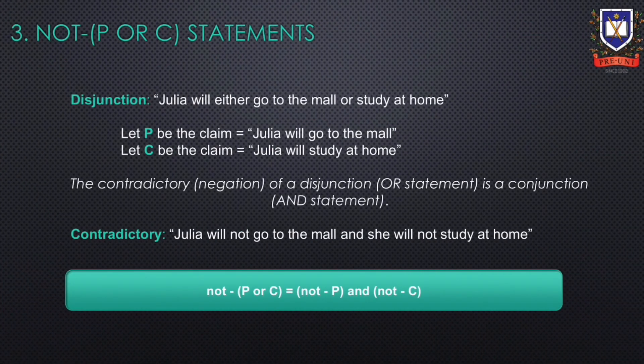A not-(P or C) statement is the contradictory of a disjunction. For example, consider the disjunction: Julia will either go to the mall or study at home. Let P be the claim that Julia will go to the mall and let C be the claim that Julia will study at home. The contradictory of a disjunction is a conjunction. So the contradictory of this disjunction is: Julia will not go to the mall and she will not study at home.